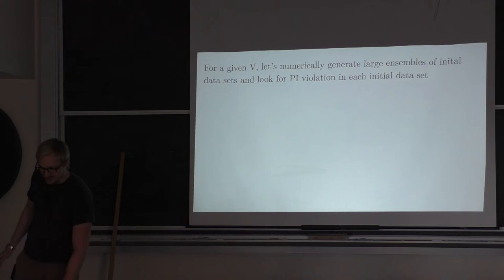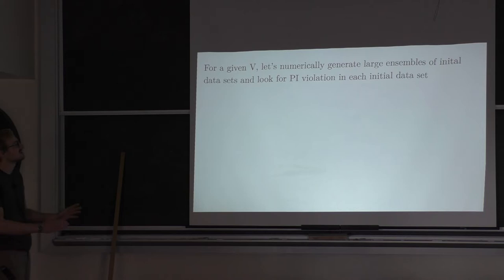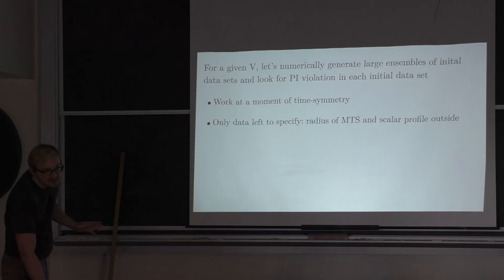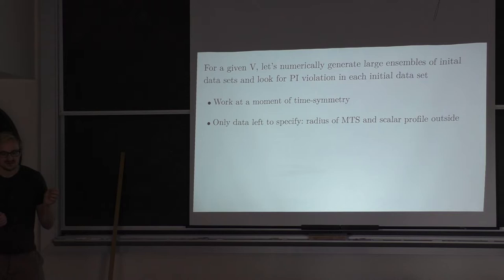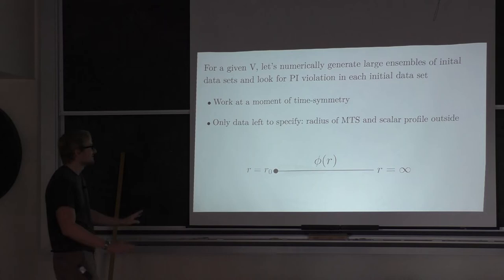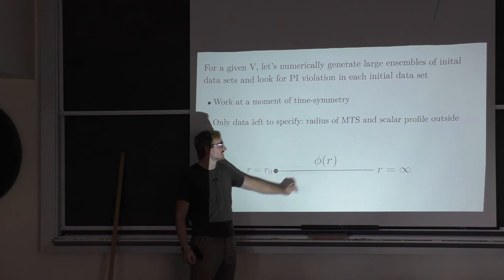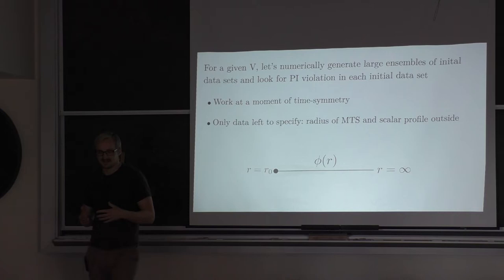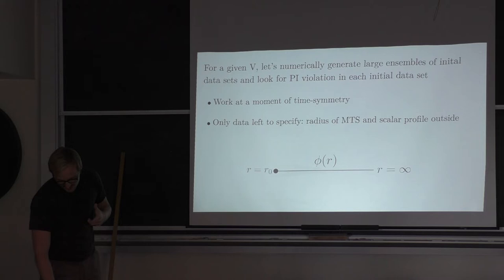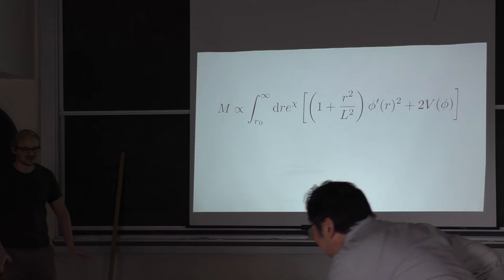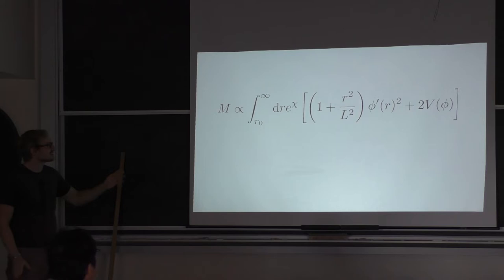For a given potential, I numerically generate large ensembles of initial data sets and look for violations. Working at the moment of time symmetry, the Einstein constraint equations reduce so that the only data to specify are the radius R_0 of the marginally trapped surface mu and the scalar profile outside it. Specifying R_0 and the scalar profile phi(r), the geometry follows from solving the constraints. A complete initial data set is produced by gluing a second copy of this data to itself along R_0.